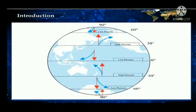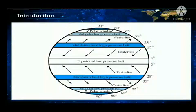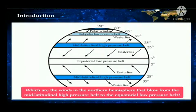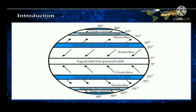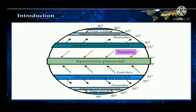Now, observe this diagram and answer the questions. Which are the winds in the northern hemisphere that blow from the mid-latitudinal high pressure belt to the equatorial low pressure belt? Easterlies blow from the mid-latitudinal high pressure belt to the equatorial low pressure belt in the northern hemisphere.